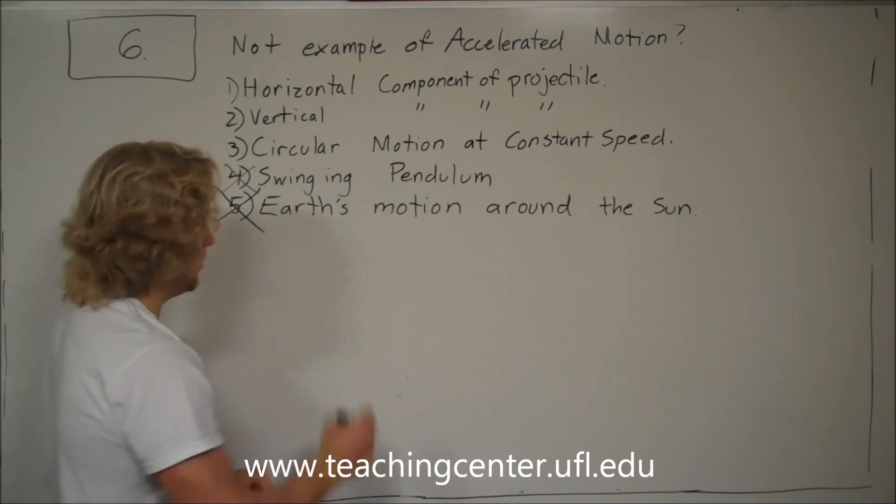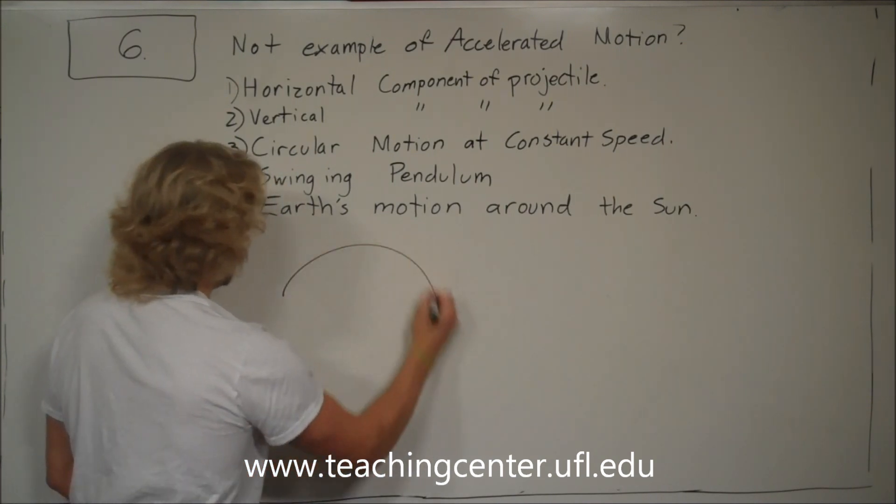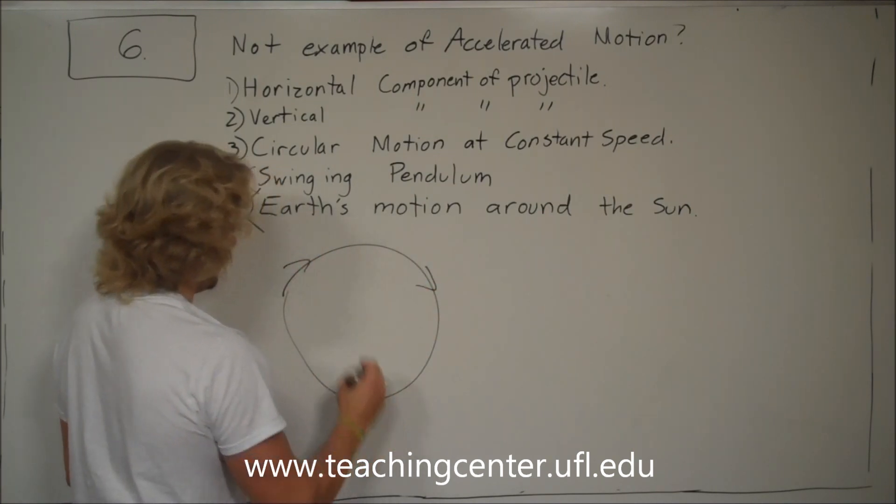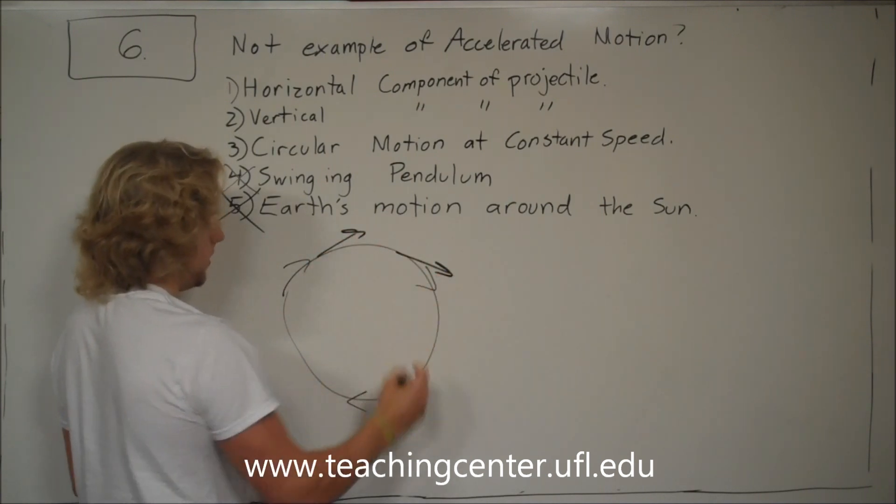Circular motion at constant speed - going around a circle, round and around at constant speed. We've already gone over how you're changing directions, so that's an acceleration.